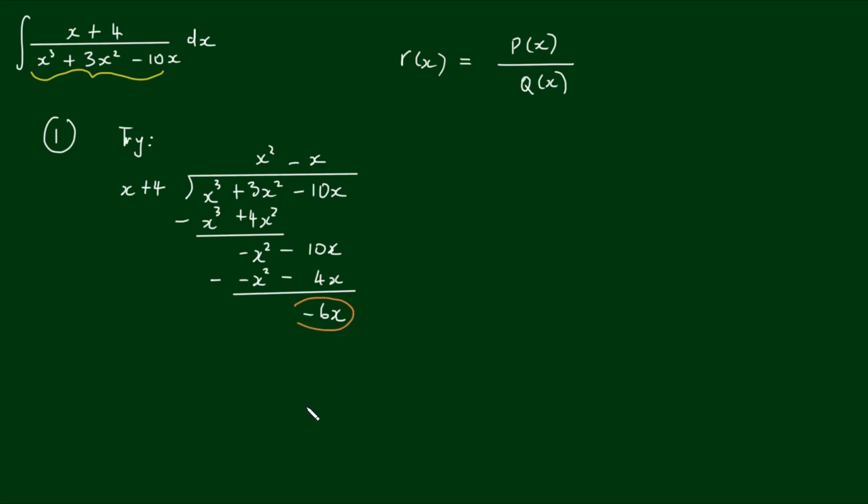We end up with a remainder of negative 6x, which means unfortunately that x plus 4 is not a factor of the denominator, so we can't simplify it. We'll go on to the method of partial fractions.